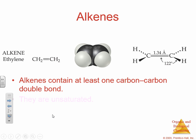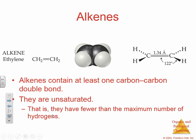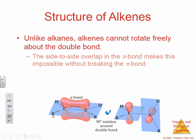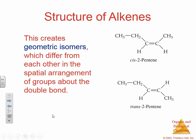Alkenes have at least one double bond. They are unsaturated because they are not holding the maximum number of hydrogens. If we look at an alkene, you're going to see that we have pi bond overlap, and this creates geometric isomers which differ in spatial arrangement. You can see here that we have cis-2-pentene and trans-2-pentene — it depends where the H's line up. In the cis, the H's are both on the bottom; and on the trans, they're opposite one another.